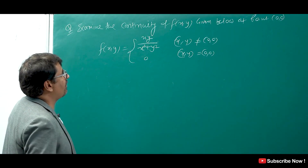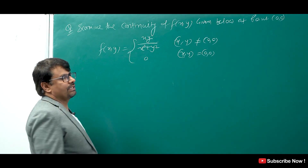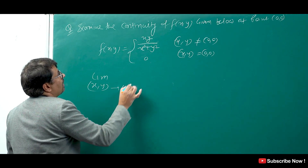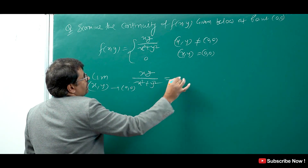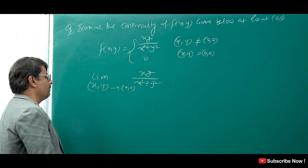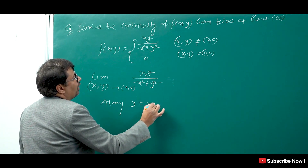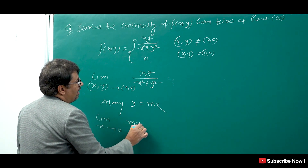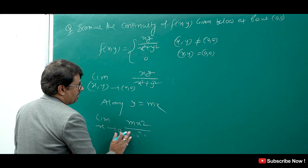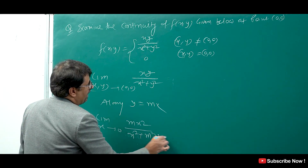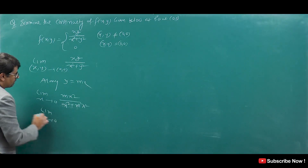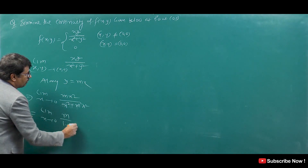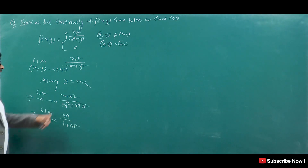Examine the continuity of f(x,y) given below at the point (0,0). We check the limit as (x,y)→(0,0) of xy/(x²+y²). Since we are approaching the origin, we take along path y = mx. Then the limit as x→0 becomes: (x·mx)/(x² + m²x²) = mx²/[x²(1 + m²)]. The x² cancels, giving m/(1 + m²). We can see that for each value of m this gives a different value.